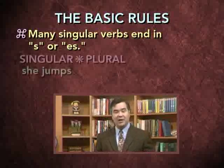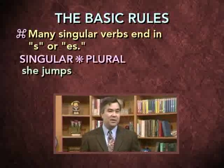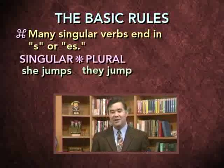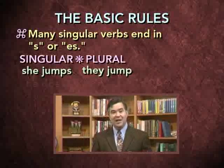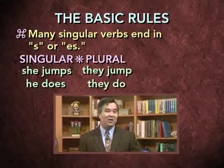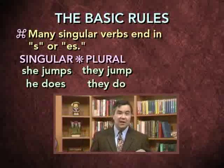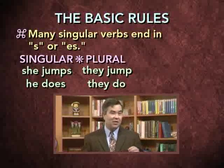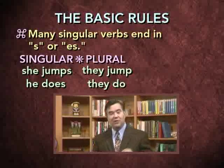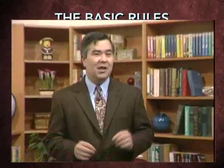So, for example, look at these phrases: she jumps, they jump; he does, they do. Notice that in each case, the singular form of the verb ends in S or ES, while the plural form of the verb does not. It's simply a rule you need to learn and apply to English. There's no rhyme or reason behind it — that's just the way it's done in the English language.